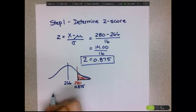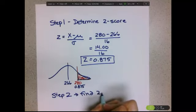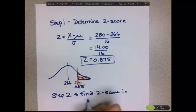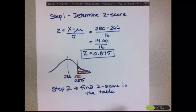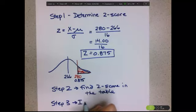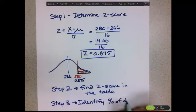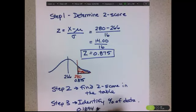Our step two was to find our z-score in the table. That was 0.88. Step three was to identify the percentage of the data. The value we had was 0.1894, which is going to give us a percentage of 18.94.